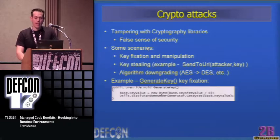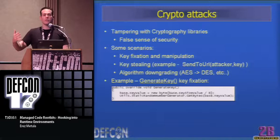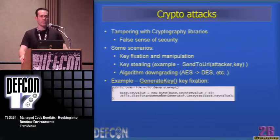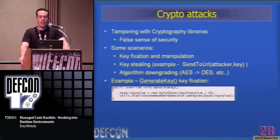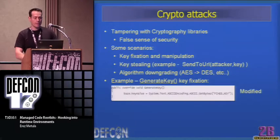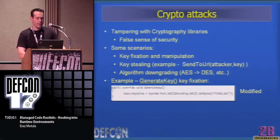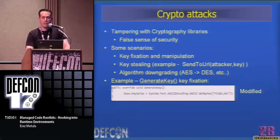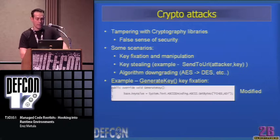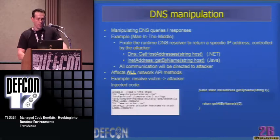DNS manipulation: taking the user to somewhere they didn't want to go. A code was injected into the DNS classes so that when resolving is performed for, say, www.forexcodeserver.com, the resolution returns the attacker's IP instead. In Java, the target method is InetAddress.getByName — Java's DNS resolver. In .NET it's GetHostAddresses, basically the same. The injected code overwrites the resolved hostname and returns the attacker's address.